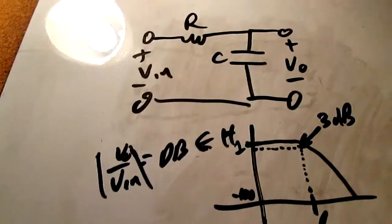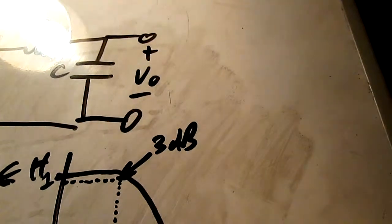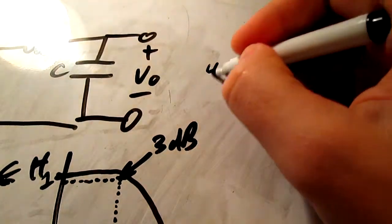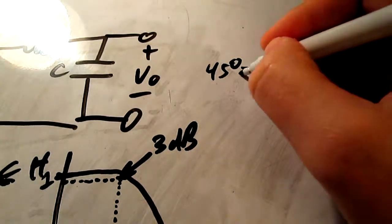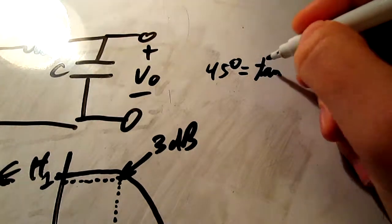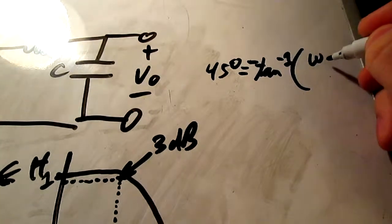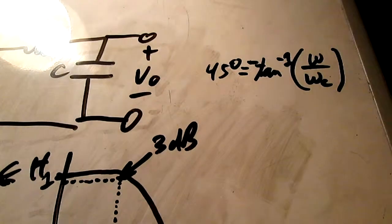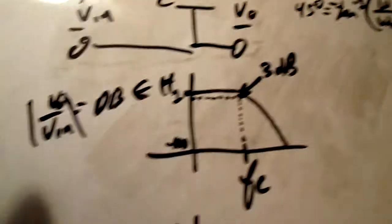So we know the phase angle of this circuit, in order to find our center frequency, is going to be 45 degrees. And that's equal to the arctan, the negative arctan, of omega over omega c. Now, to find omega and omega c, we need to find the transfer function h.